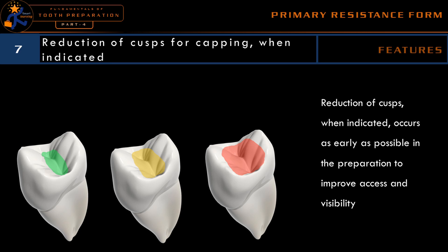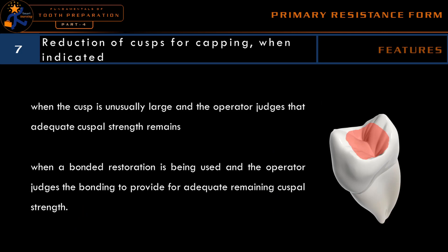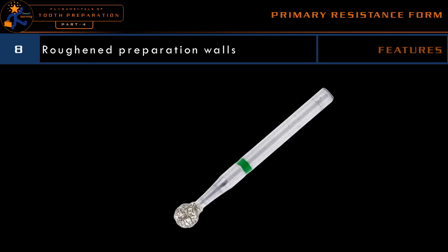If the dentist decides not to go for a cusp capping procedure, then a restoration like amalgam should be preferably avoided — the dentist may choose a composite restoration over amalgam in those situations. The last feature is that whenever we think of giving a bonded restoration, it is better to keep the preparation walls roughened, which is not indicated for an amalgam or cast restoration. But for a bonded restoration like composite, roughened tooth walls will increase the surface area for bonding and thus enhance the strength of the tooth, which will enhance the primary resistance form.